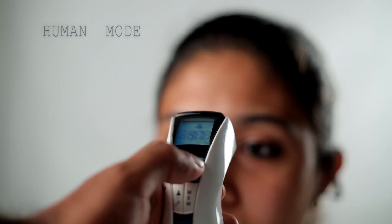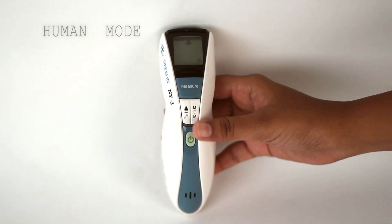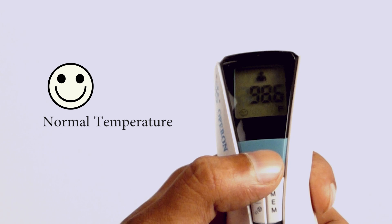Select human body, press and hold measure button and bring close to forehead and keep distance. You will hear a continuous beep sound, that is where you release the measure button. The results are displayed.